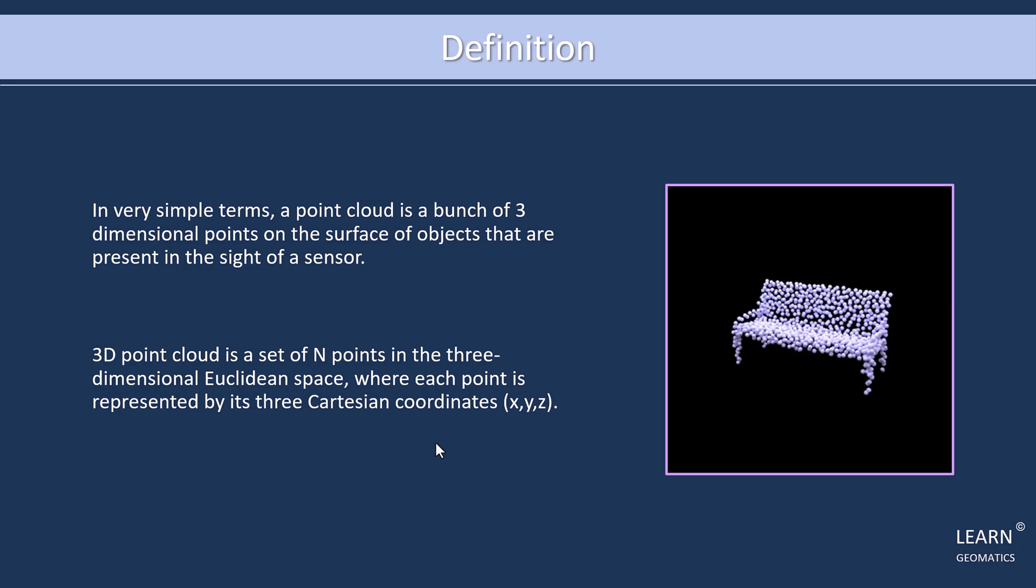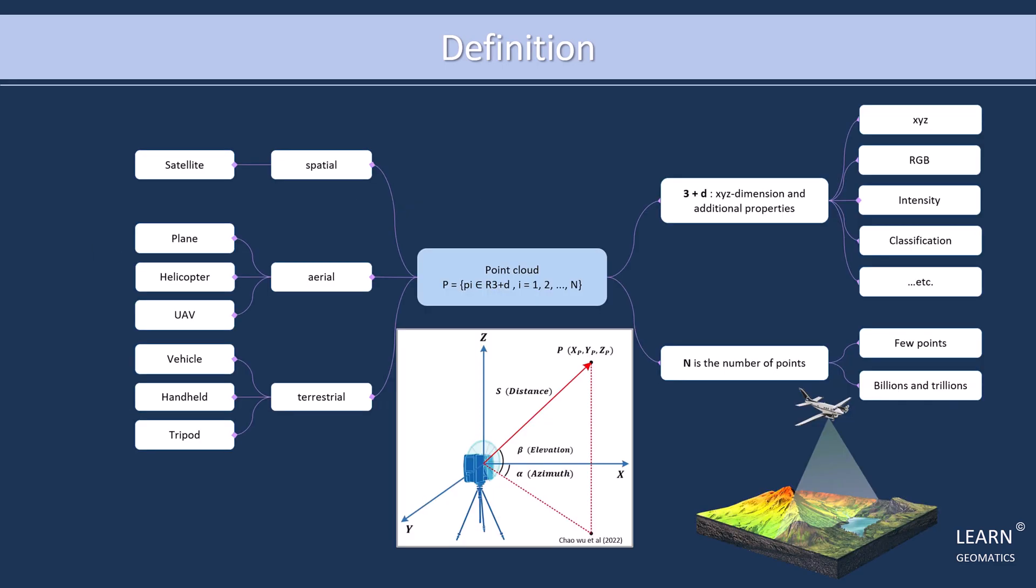To give you a better idea of what a point cloud looks like, here's an example. Let's say we want to capture the surface of a lounge. A sensor captures points on the surface of the lounge, and those points are stored as a point cloud. Each point represents a specific location on the lounge's surface, and the point cloud as a whole represents the shape of the lounge.